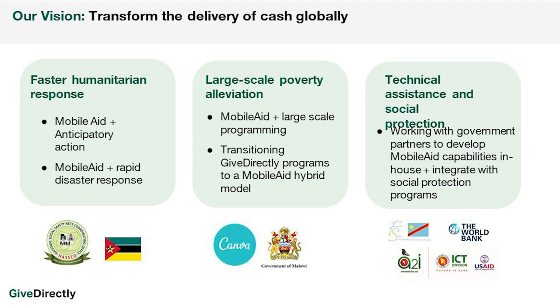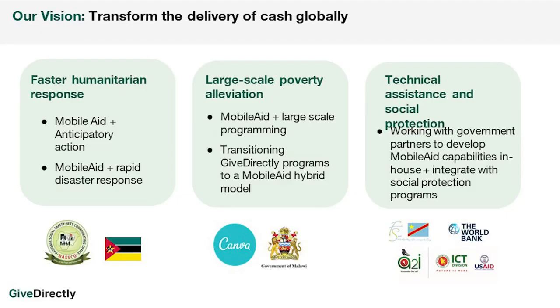We think this approach could be significantly utilized in three particular buckets: cash for humanitarian response — crisis situations like COVID lockdowns, Pakistan floods, or Mozambique cyclones, including anticipatory action transfers for harm reduction before a disaster; large-scale poverty alleviation programs like GiveDirectly does across our countries; and technical assistance and social protection for governments. Those are the three areas where we think this approach could further scale the impact that cash can have.